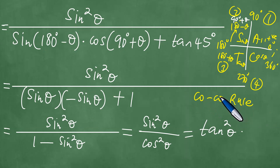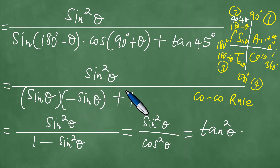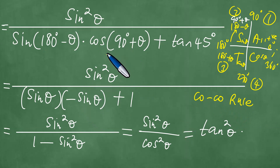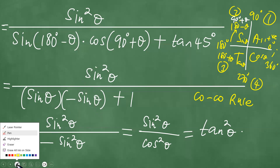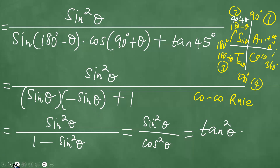There's something called the COCO rule. The COCO rule means that if there's a 'CO' at 90 degrees — for example cosine — you remove the CO and you're left with sine. If there's no CO, then the COCO rule says you put on the CO, giving you cosine. Just focus on that rule.